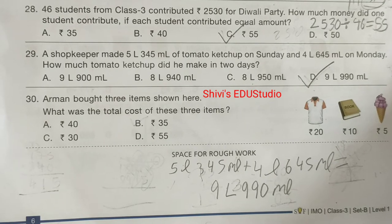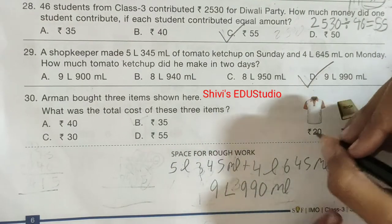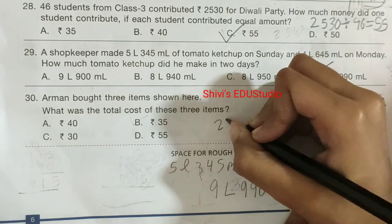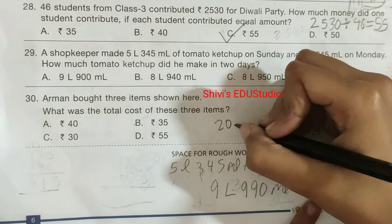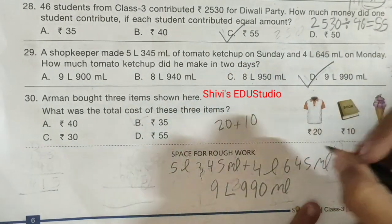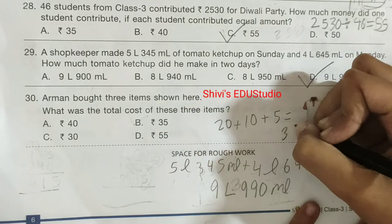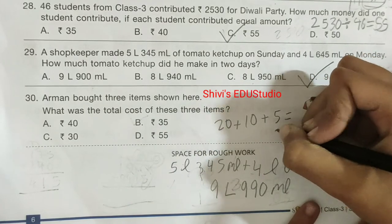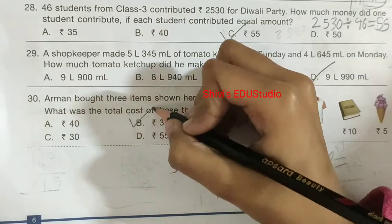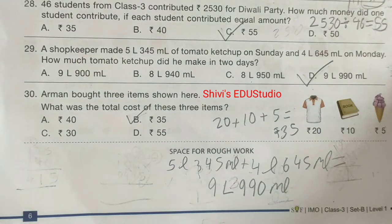Option D is the correct option. Question number 30. Arman bought 3 items. What was the total cost of these 3 items? Shirt: 20 rupees. Book: 10 rupees. Ice cream: 5 rupees. Total is 20 plus 10 plus 5, which is equal to 35 rupees. So option B is the correct option.